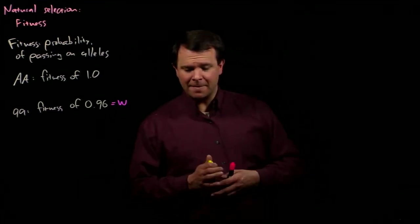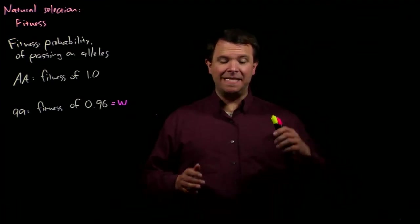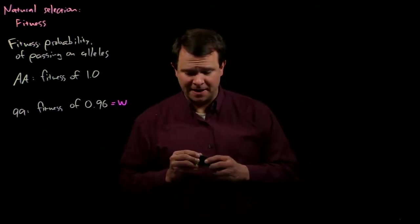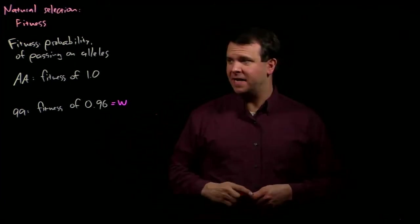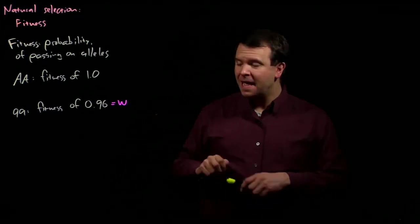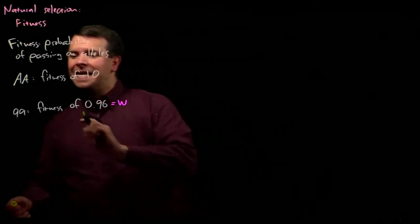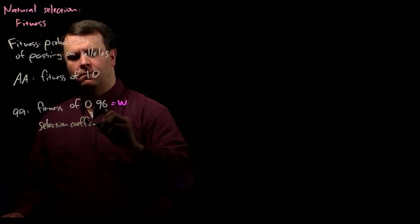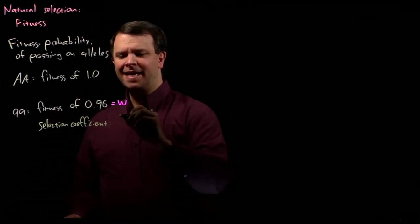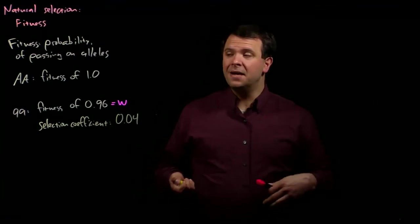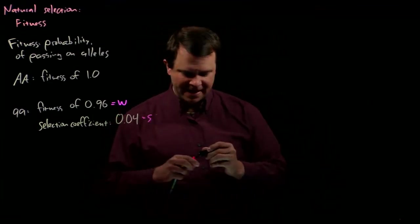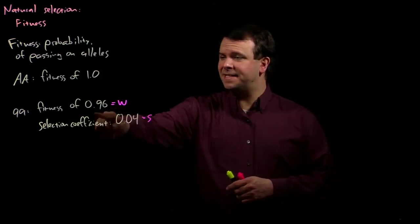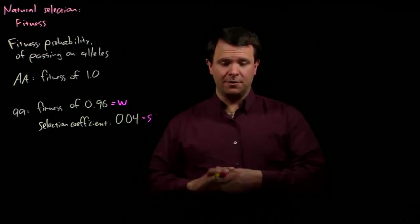It's also useful to ask, how disfavored is one genotype compared to another? In this particular example, the little a little a genotype produces 4% fewer offspring on average than a big A big A genotype. And we call this the selection coefficient against little a little a. For this little a little a genotype compared to big A big A, its fitness is 0.96 and the selection coefficient is 0.04.